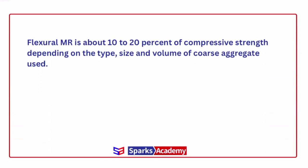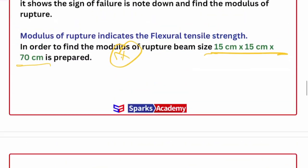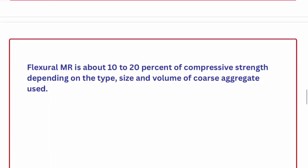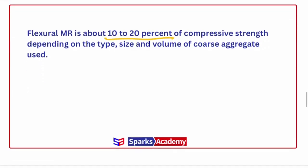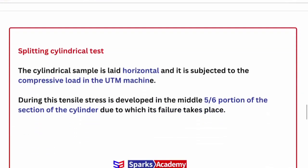In the flexural modulus of rupture, what percentage is it compared to compressive strength? It is around 10 to 20 percent of the compressive strength. Note this: if for example compressive strength is 100, then the flexural modulus of rupture will be 10 to 20 percent of that. Simply put, the tensile strength is around 10 to 20 percent of the compressive strength. This range depends on the type, size, and volume of coarse aggregate used — the type and size of aggregates we use will affect the tensile strength value.